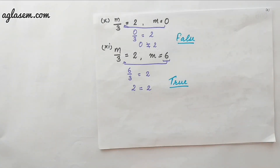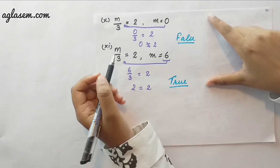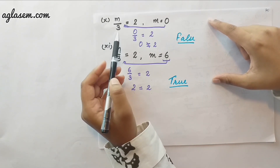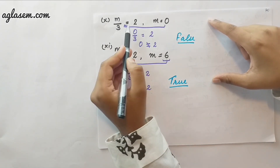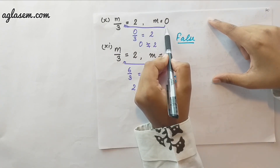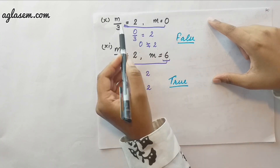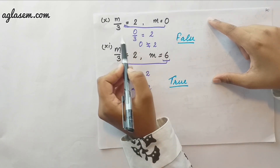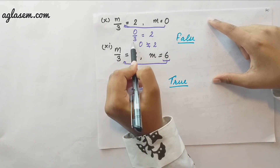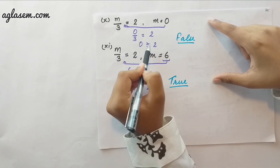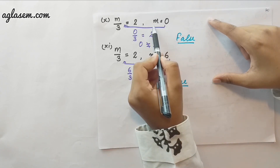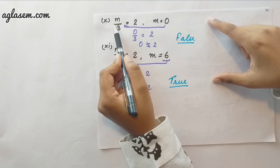In the tenth question, the equation is m by 3 equals to 2 and the value of m is 0. We put 0 into the equation: 0 by 3 equals to 2. 0 is not equal to 2, therefore this value of m does not satisfy the equation.